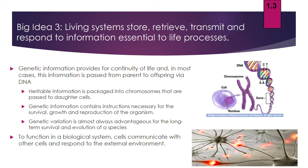Our third big idea is that living systems store, retrieve, transmit, and respond to information essential to life processes. Our nervous system is responsible for sensing and responding to the environment. But even at the cell level, our genetic information is critical for the continuity of life. Our genes — our DNA — are passed from parents to offspring, containing all heritable instructions packaged into chromosomes. Those chromosomes have the instructions necessary for survival, growth, and reproduction. Genetic variation is almost always advantageous for the long-term survival of the species.